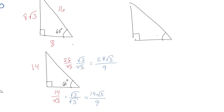If you're only given the hypotenuse, say 42, then the shortest side is half of that: 21. The side opposite the 60° is 21√3.